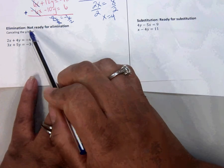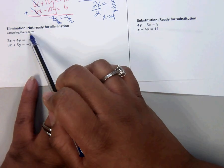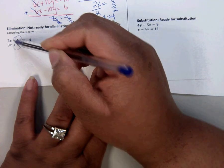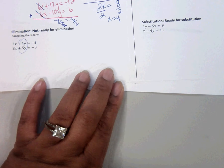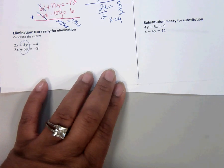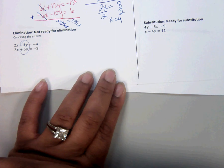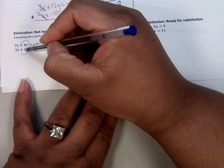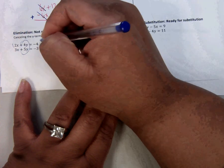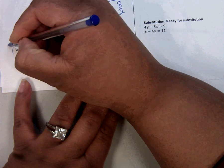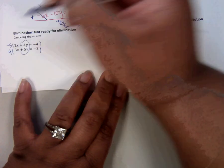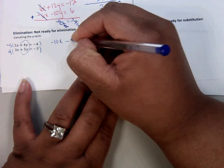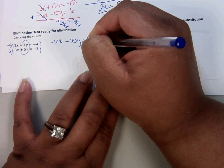Instead of the x term, I want to do the y term. But again, this is not ready for elimination. So, if we're focusing on that, how can we make them ready for canceling? Well, I can make them both 20. If I multiply this times 5 and then this times 4. And then make one of them negative so it will cancel. So, let's do that. And I'm going to choose the top one. Just because it doesn't matter which one you make negative.